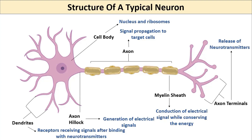The myelin sheath is formed by nearby cells called glial cells, also called Schwann cells in the peripheral nervous system or oligodendrocytes in the central nervous system. These cells are also very important for the development, maintenance, and function of neurons.